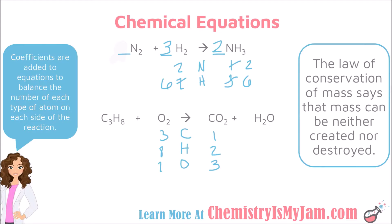Beginning with carbon: three on the left and one on the right, so place a 3 in front of CO₂. That changes carbons to 3 on the right but also changes oxygens to 3 × 2 = 6 plus the one from water, giving 7 oxygens on the right. Now for hydrogen: eight on the left and two on the right, so place a 4 in front of H₂O — 4 × 2 = 8 hydrogens. This also changes oxygens: 3 × 2 = 6 plus 4 gives a total of 10 oxygens on the right.